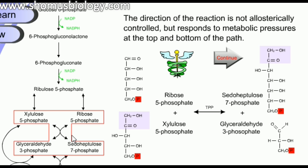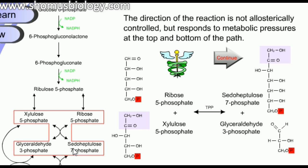The enzyme involved in these processes is transketolase. For example, transketolase uses xylulose-5-phosphate and ribose-5-phosphate as substrates and converts them into glyceraldehyde-3-phosphate and sedoheptulose-7-phosphate. The total number of carbons is maintained at 10: xylulose-5-phosphate (5 carbons) plus ribose-5-phosphate (5 carbons) gives glyceraldehyde-3-phosphate (3 carbons) plus sedoheptulose-7-phosphate (7 carbons), and 3 + 7 = 10.